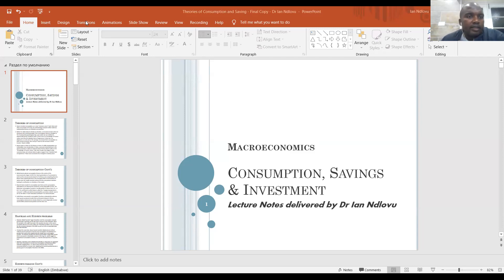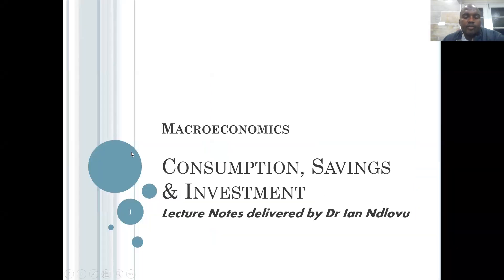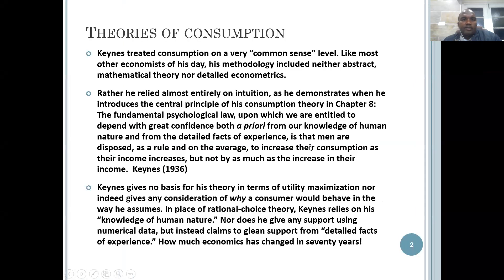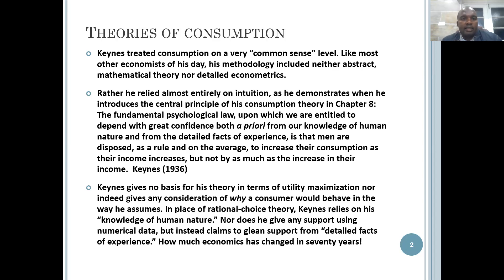When we are looking at national income determination, there is an aspect we need to tackle from the onset. There is what is known as the absolute income hypothesis, which was propounded by John Maynard Keynes in the late 1930s.